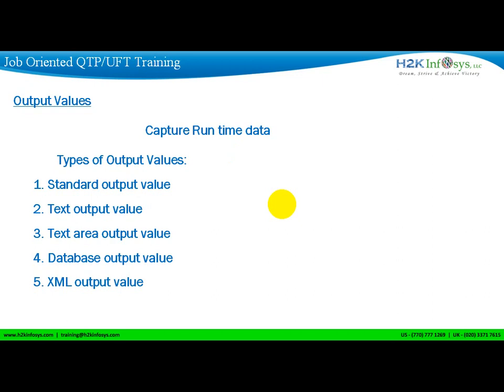There are different types of output values: standard output value, text, text area, database, and XML. It depends on from where you want to capture the data — whether it's from the database, or from an XML tag or node value, or from a text box, or from the property of an object. You are going to use different output values accordingly.